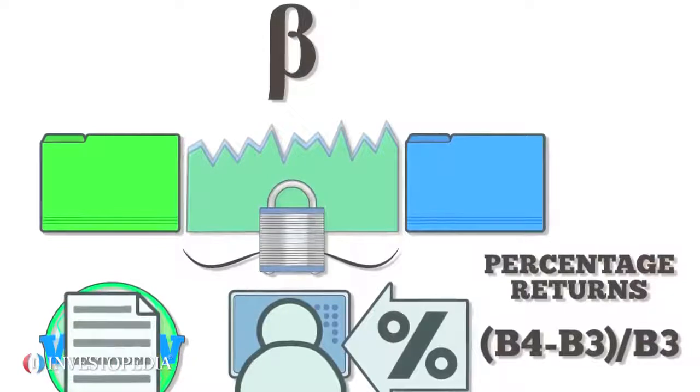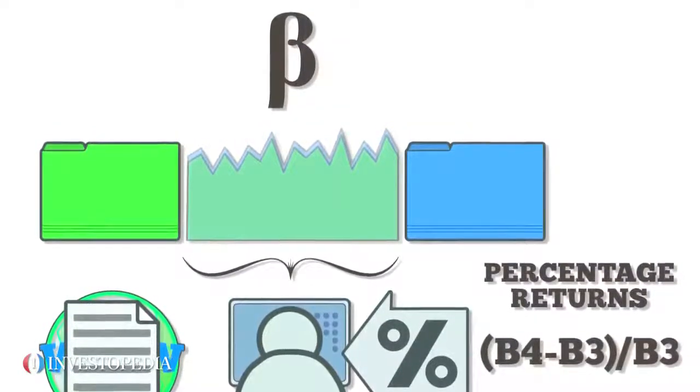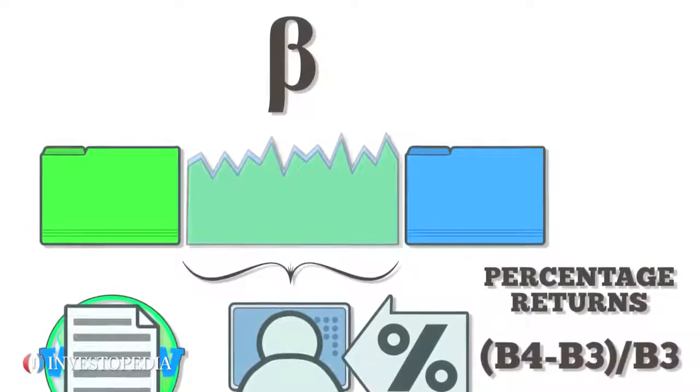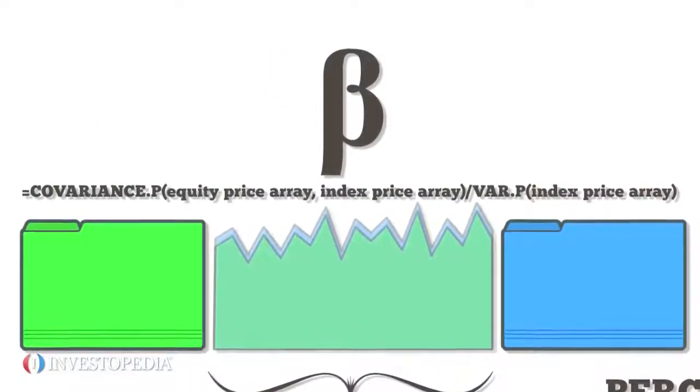Once you have an array of percentages for both, you can calculate beta. One way Excel solves for beta is by using a regression with this formula. Excel presents the arrays as columns of price data.